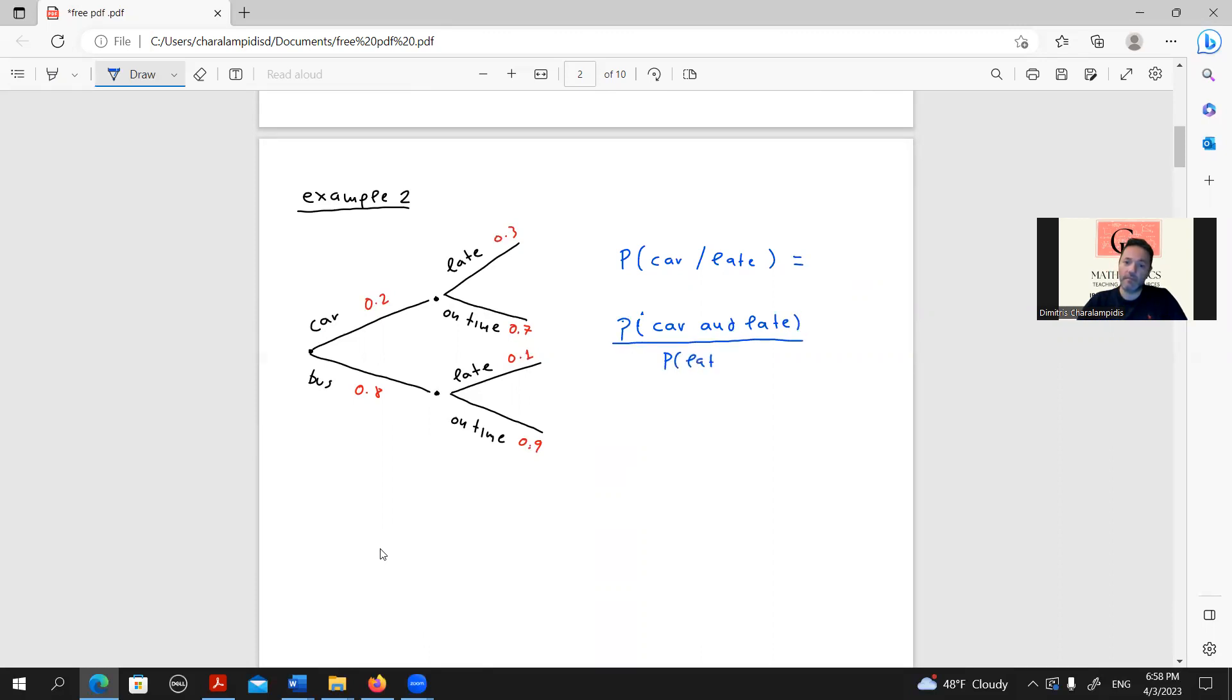According to which the probability of car given late is equal to the probability of car and late over the probability of late. Probability of car and late is equal to the probability of a specific road. So it's this, 0.2 times 0.3.